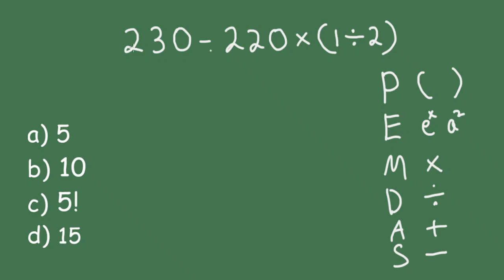So from here, we have parentheses, 1 divided by 2. So we start with this. This becomes 230 minus 220 times 1 divided by 2 is 1 half, or 0.5.